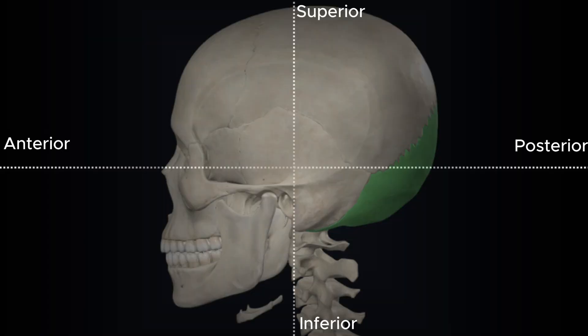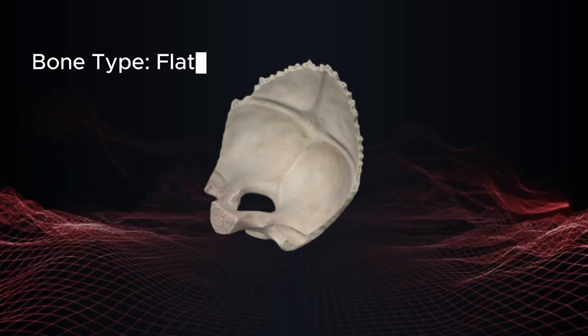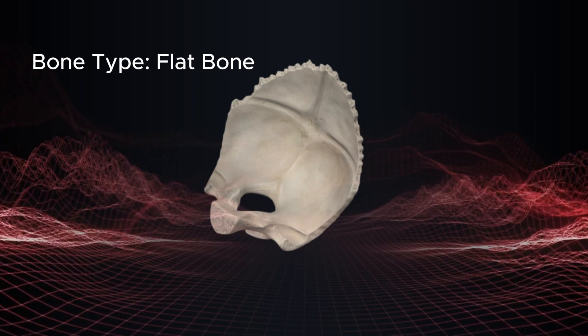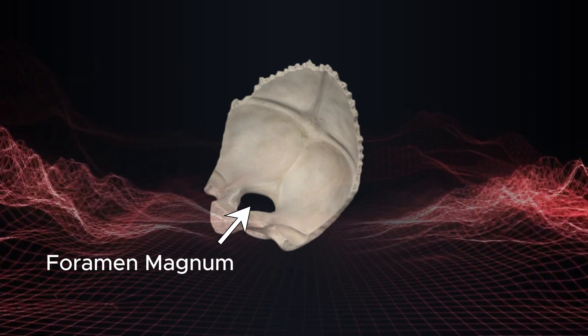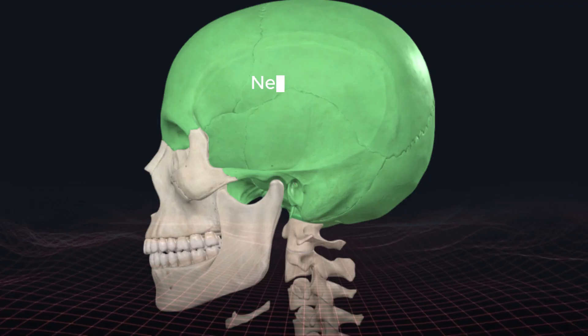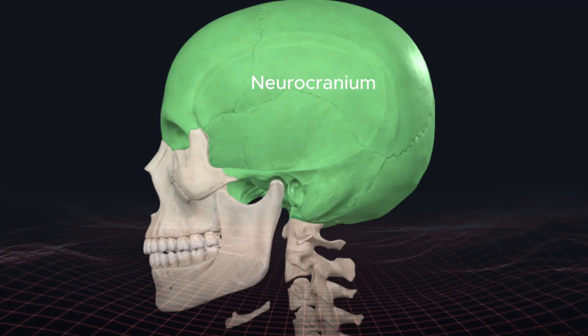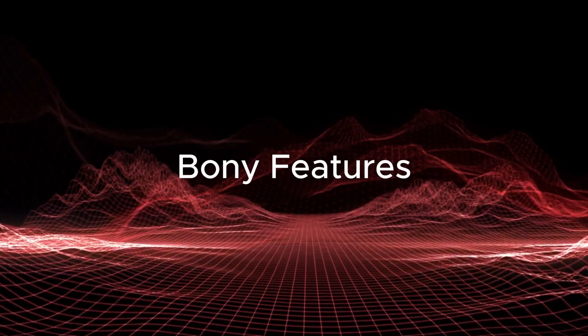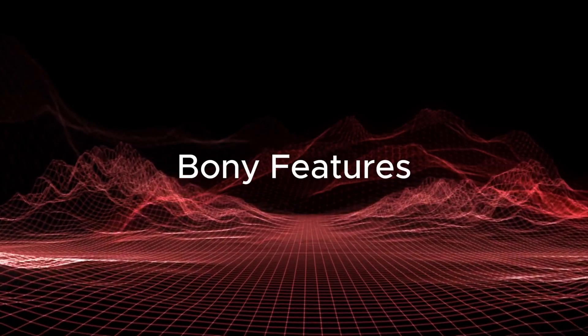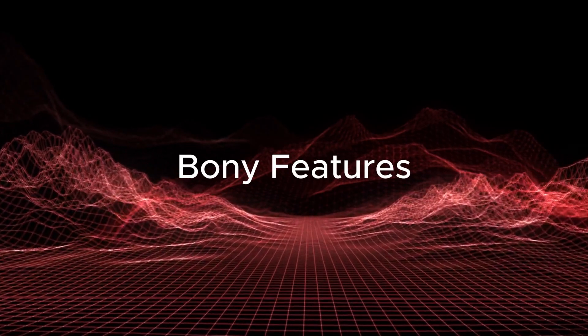The occipital bone is the single large bone found along the postero-inferior aspect of the cranium. It is classified as a flat bone, forms the foramen magnum, and contributes to the formation of the neurocranium. The occipital bone includes several distinct bony features.